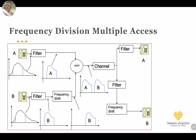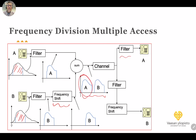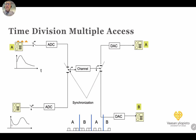Looking at an FDMA example: transmitter A and transmitter B each have a certain band. A bandpass filter selects the band to transmit, then a frequency shift is applied by multiplying with a cosine carrier, and then A and B are summed and transmitted over the same channel. At the receiver, bandpass filters separate A and B, and a reverse frequency shift (demodulation) recovers each signal.